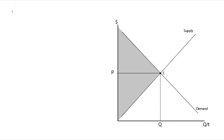If we can increase the size of that triangle — whether it's increasing consumer surplus or producer surplus — then we have increased efficiency.